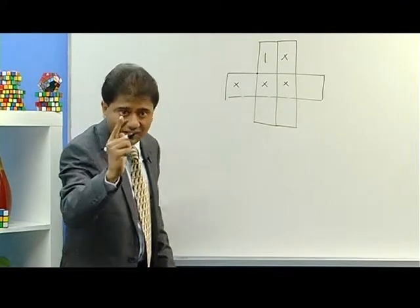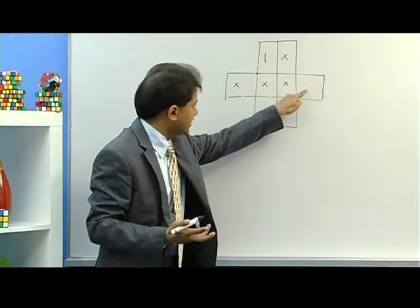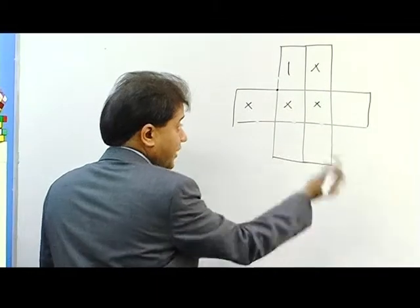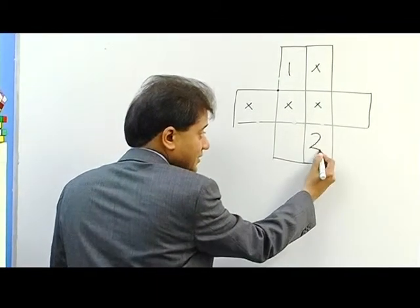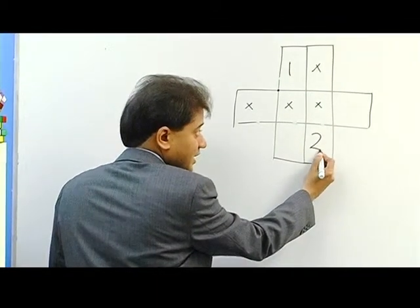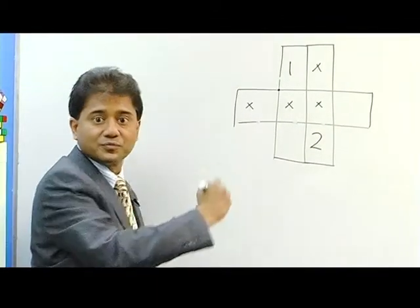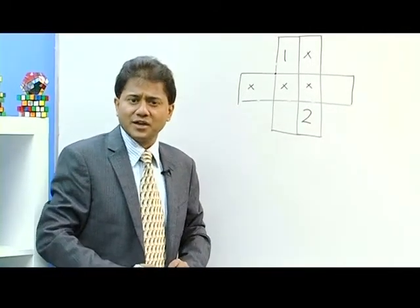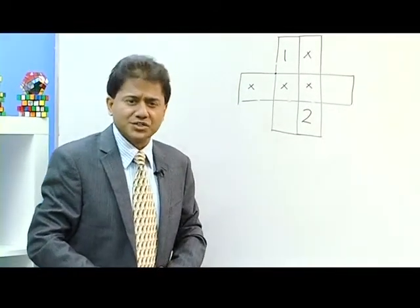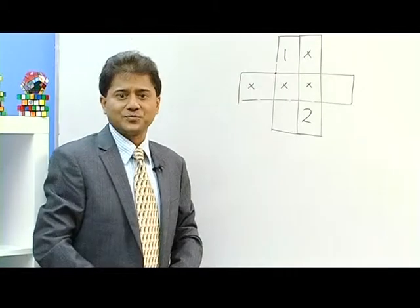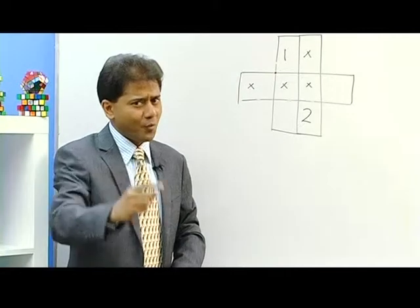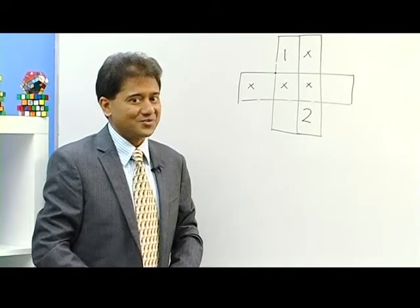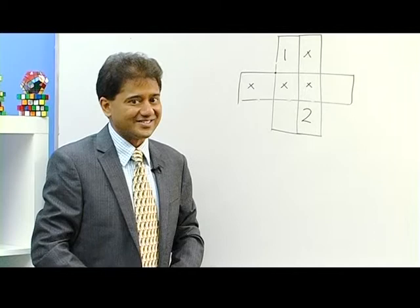Which means if you put one here, two has to be either here, here, or here — somewhere non-adjacent — and so on. This is going to be a very very interesting puzzle involving each and every person in your family. I'm going to give you one full week to try this puzzle, and next week you will get the answers.